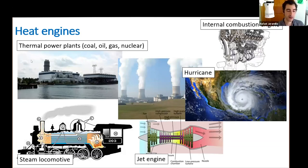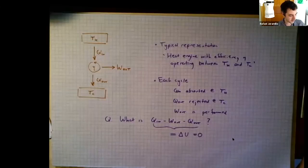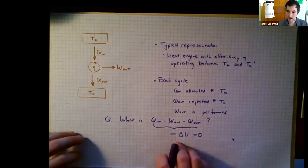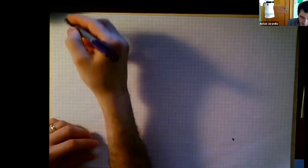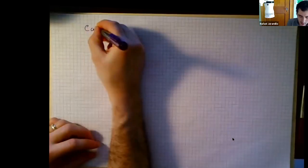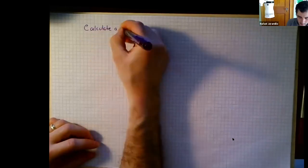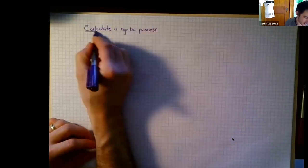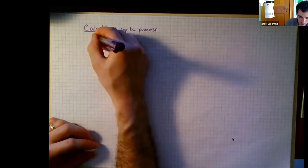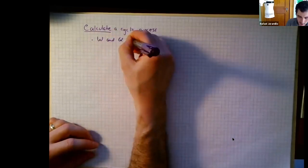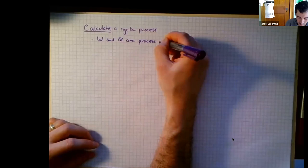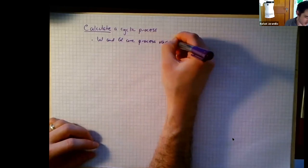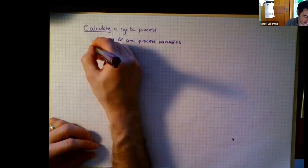Let's calculate a cyclic process. Work and heat are process variables. Thermodynamics doesn't describe real-world processes directly.